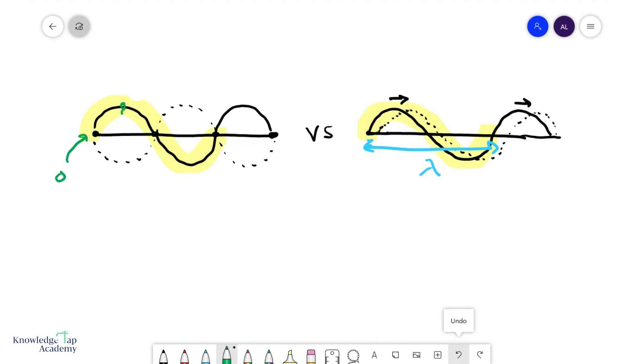But at the antinodes, their amplitudes are a maximum. So the amplitude, as you can see, increases progressively from the node to the antinode.